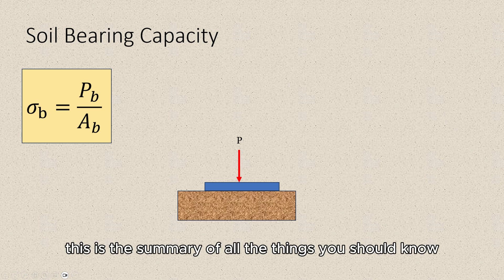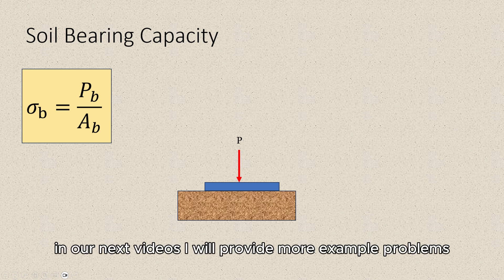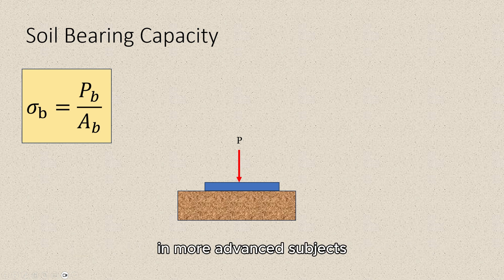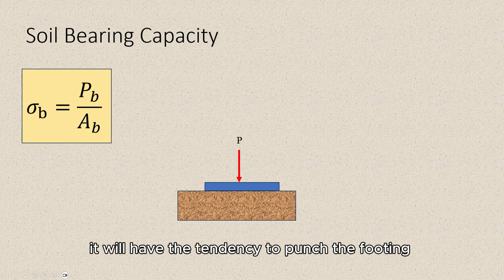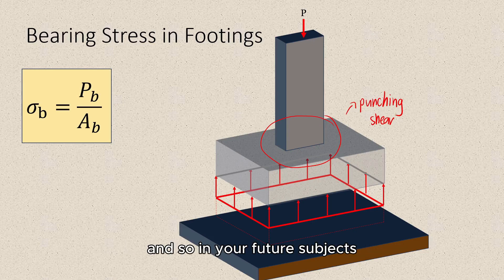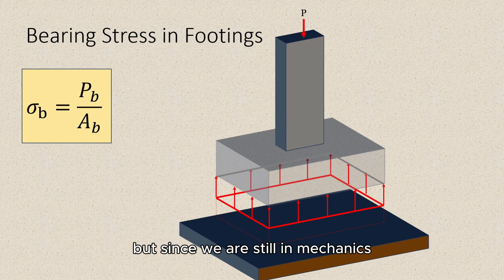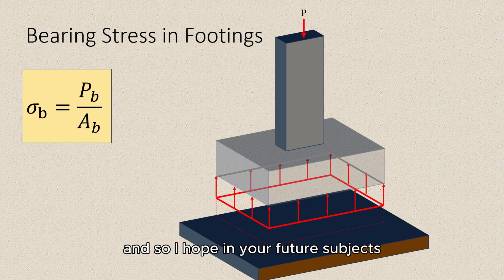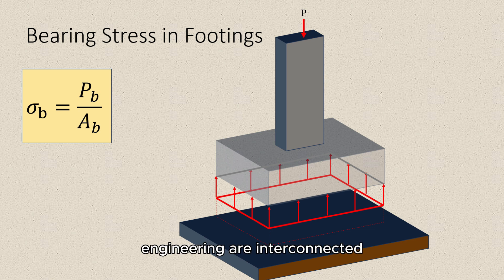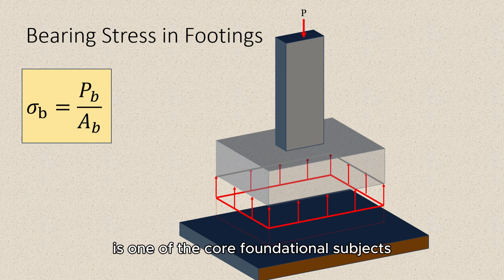This is the summary of all the things you should know related to bearing stress. In our next videos, I will provide more example problems so that you will be able to apply the concepts in more advanced subjects. As an additional input, when column loads are very large, they will have the tendency to punch the footing — in future subjects you will learn this is subjected to punching shear. Since we are still in mechanics, we will not be dealing with those, but this is just a simple orientation. Our subjects in civil engineering are interconnected, and strength of materials, or mechanics of deformable bodies, is one of the core foundational subjects.